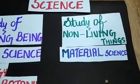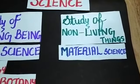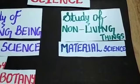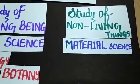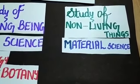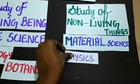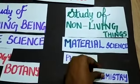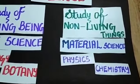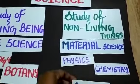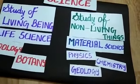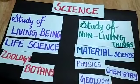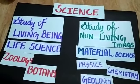Now coming to material science, it is divided into three main subjects. The first is physics, the second is chemistry, and the last one is geology. So these are the subjects that come under science.